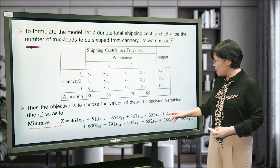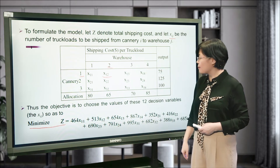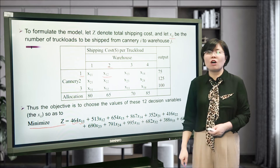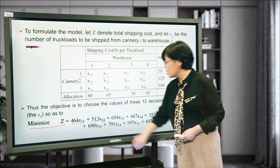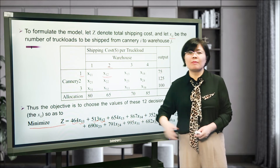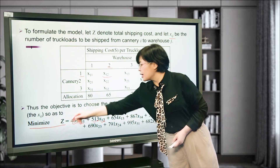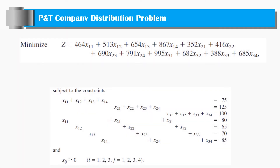The total cost is calculated by multiplying each shipment amount by its unit cost and summing all costs together. This gives us the objective function. This is the complete model of this problem — the objective function and the constraints.